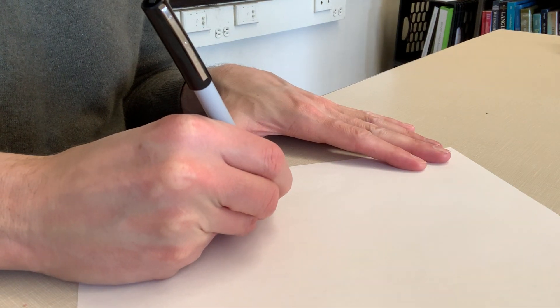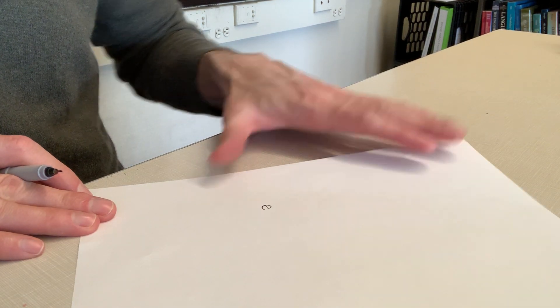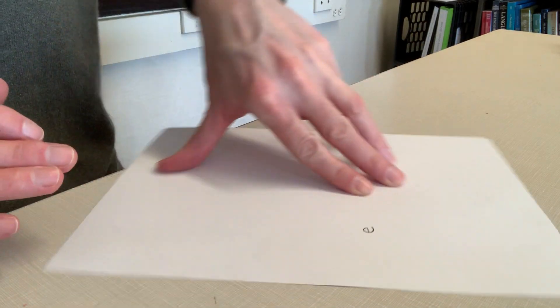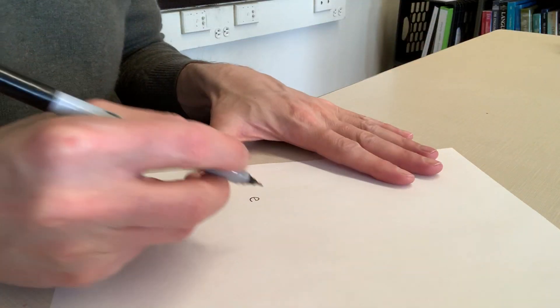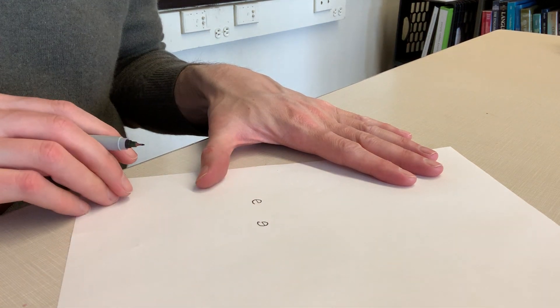When we make the schwa symbol, basically it's just like the lowercase e, except that it's turned. Please note that it is not a backwards e.